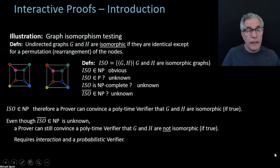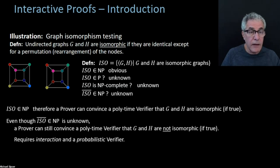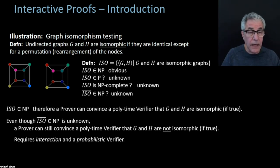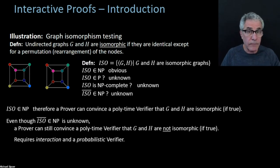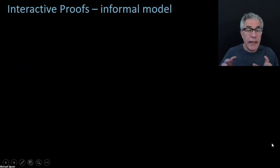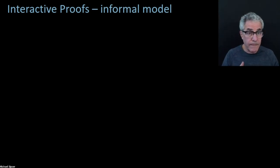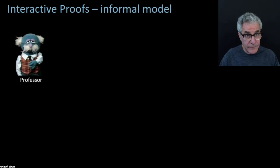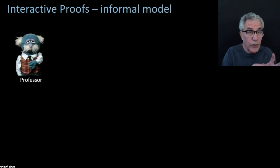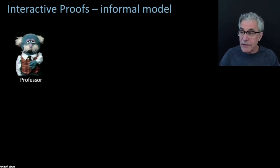So let me show you how that's done. Before we jump into the method for a prover to show a verifier that graphs are not isomorphic, let's get a little clearer on the model — I'm going to first show it informally and then look at it formally. In interactive proofs there are two parties. I'm going to think about them as one being the professor, who is going to play the role of the verifier — the one who checks. The professor, being kind of old and tired, can only operate in probabilistic polynomial time.